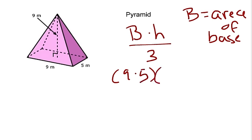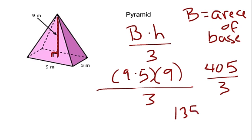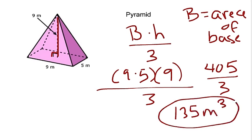The height of the pyramid is the one with the 90-degree angle, which is 9. So we have 9 times 5 equals 45, times 9 equals 405, divided by 3 equals 135. The unit is meters cubed, so the volume of the pyramid is 135 cubic meters.